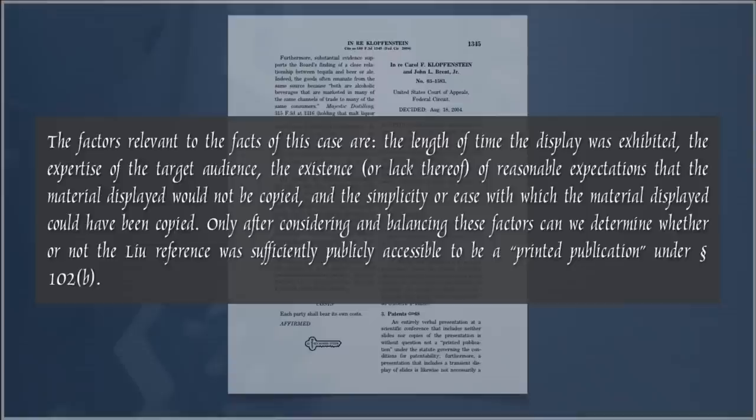In Klopfenstein, if it's disclosed to the relevant public, it doesn't necessarily matter whether there's been a publication in the ordinary sense — that disclosure to a relevant public can in effect be a publication. The court describes relevant factors: how much time the display was exhibited, how expert the target audience was, the reasonable expectations that material displayed could not be copied, and the simplicity with which it could be copied. Using a totality-of-circumstances multi-factor test, the court found this was a prior publication and therefore an anticipatory reference.